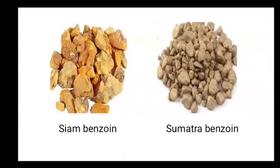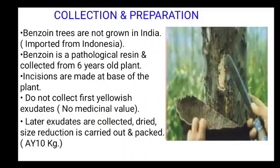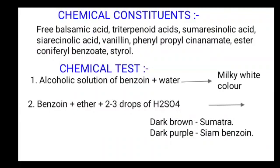Difference between Siam benzoin and Sumatra benzoin: Siam benzoin is yellowish brown to rusty brown in color, and Sumatra benzoin is grayish brown or gray in color. Collection and preparation of benzoin: benzoin trees are not grown in India — imported from Indonesia. Benzoin is a pathological resin collected from 6-year-old plants. Incisions are made at the base of the plant. The first yellowish exudate is not collected because it has no medicinal value. Later exudates are collected, dried, size reduction is carried out and packed. Average yield: 10 kg.